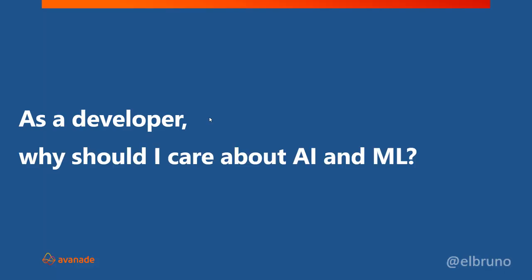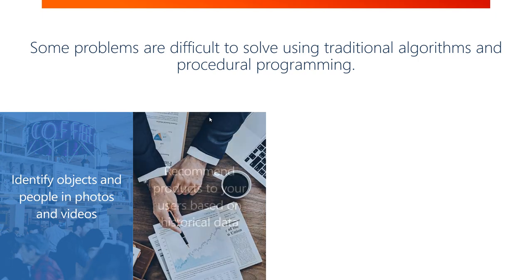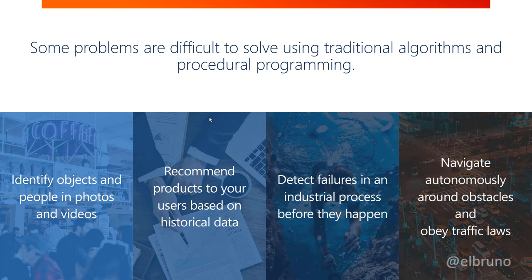We've been talking a lot about Machine Learning and artificial intelligence. A couple of months ago we were part of the Insider Dev Tour talking about these technologies, and we started to encourage people to realize that even if they are not doing Machine Learning today, we are using this technology. Things like face recognition on your phone, or Amazon and Netflix proposing recommendations — these are the things we use today. It's important for us as developers to understand how this works and embed these capabilities into our applications.